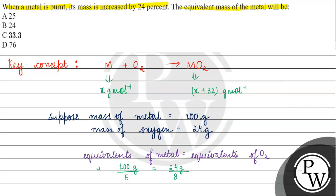The equivalent of oxygen is 8 grams per equivalent. We calculate this as 16 divided by 2, which gives us 8 grams per equivalent. Now we need to find this value.